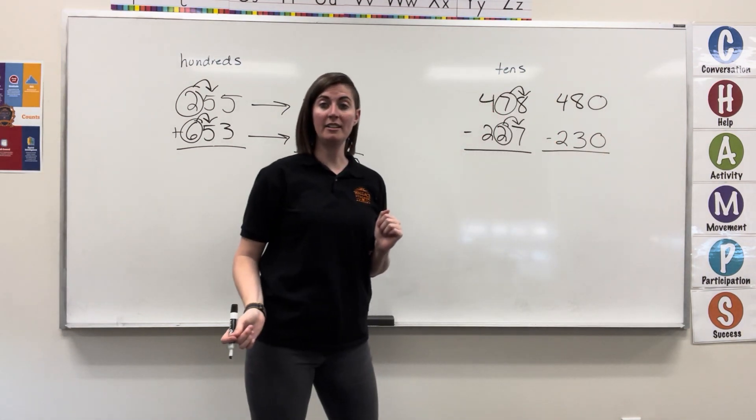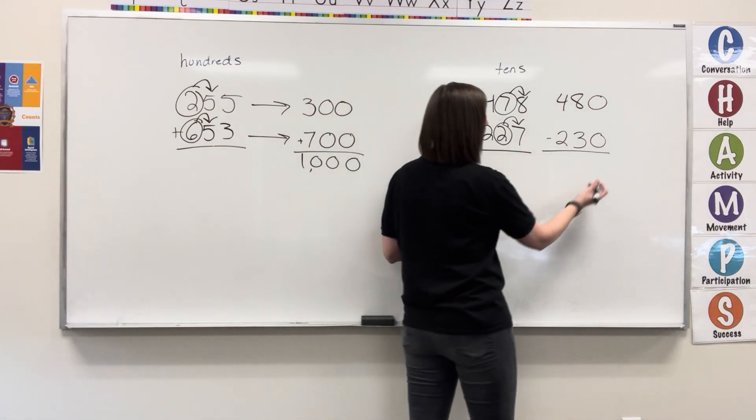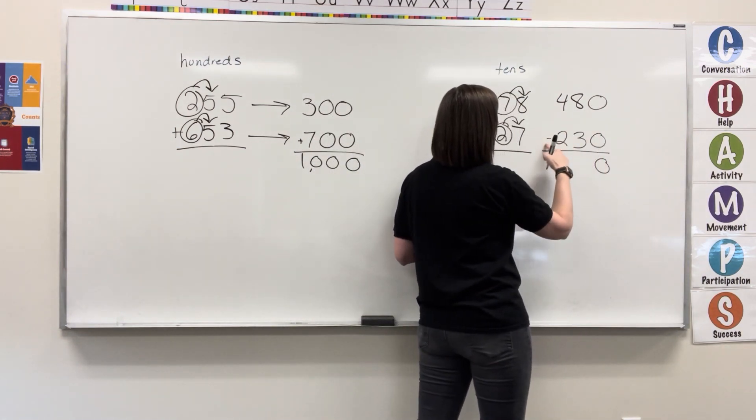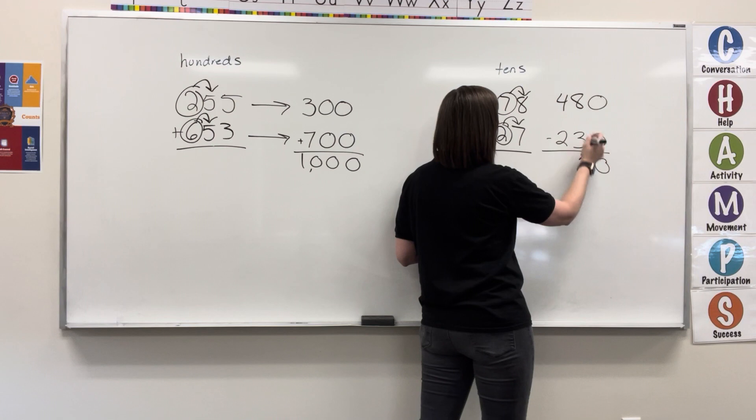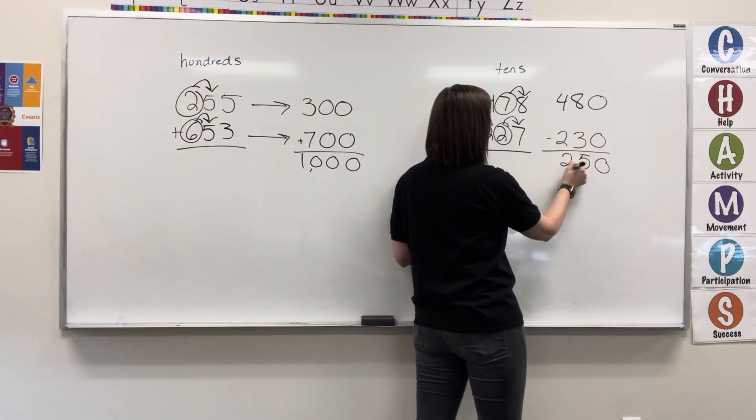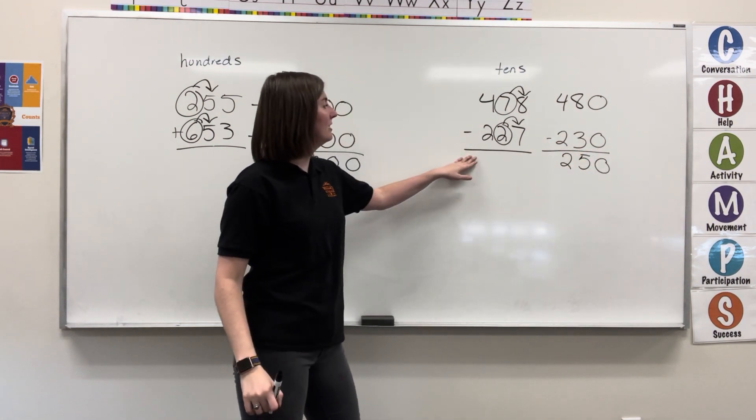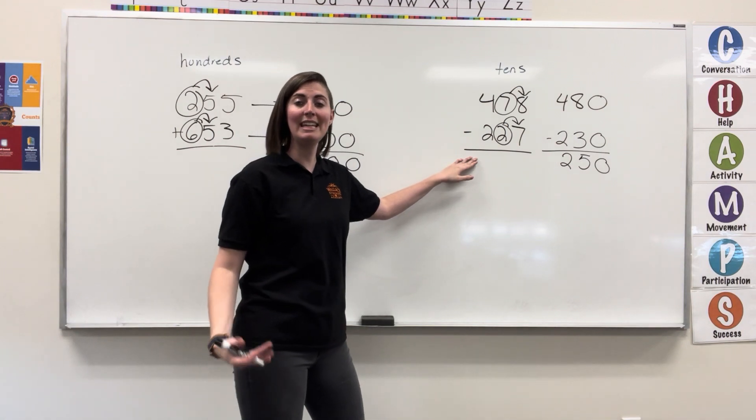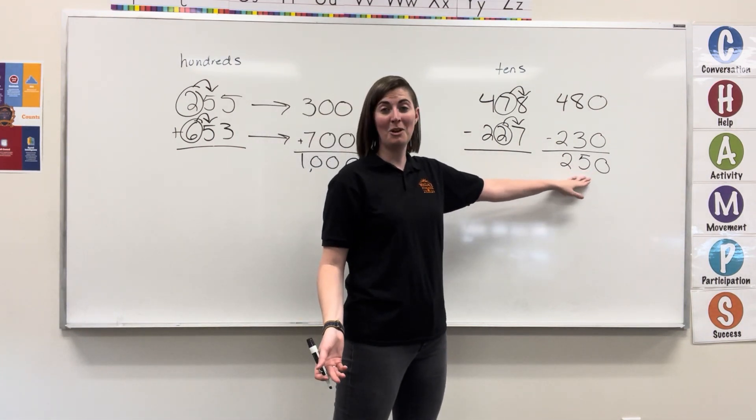Now, we can subtract to find our estimate. Zero minus zero is zero. Eight minus three equals five. Four minus two is two. That means 478 minus 227 is about 250.